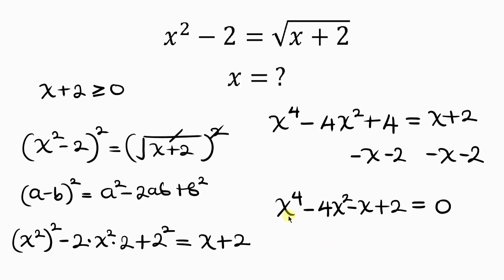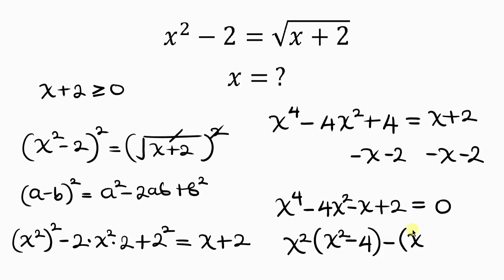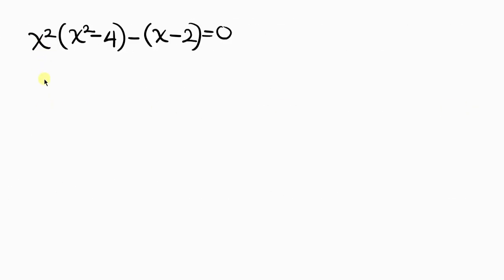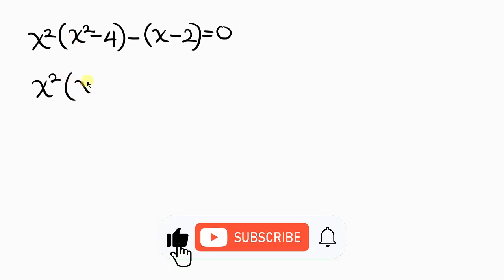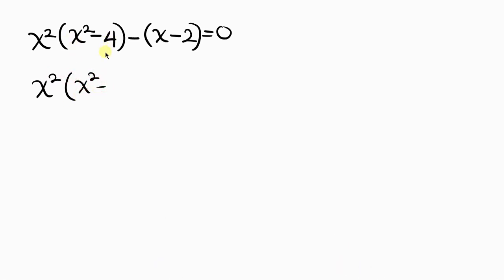Notice that from the first two terms, x squared is common, so we can factor out x squared. We get x squared times (x squared minus 4), then minus (x minus 2), all equal to 0. Now 4 is actually a perfect square — we can write it as 2 squared. So we have x squared times (x squared minus 2 squared), minus (x minus 2), equal to 0.